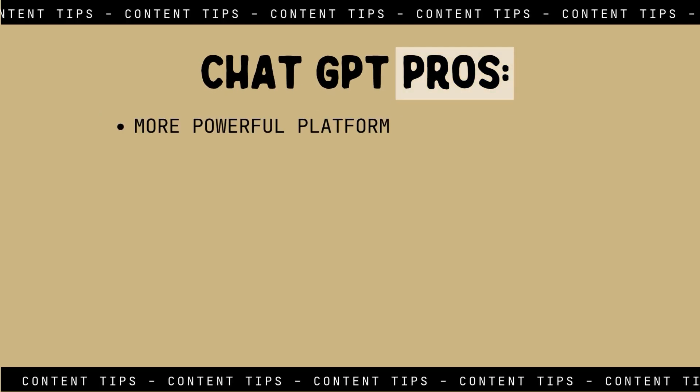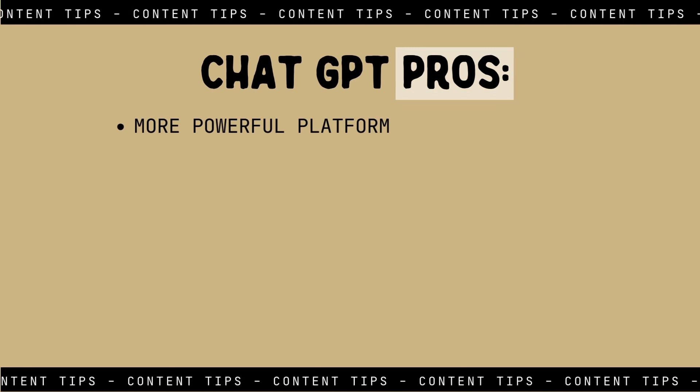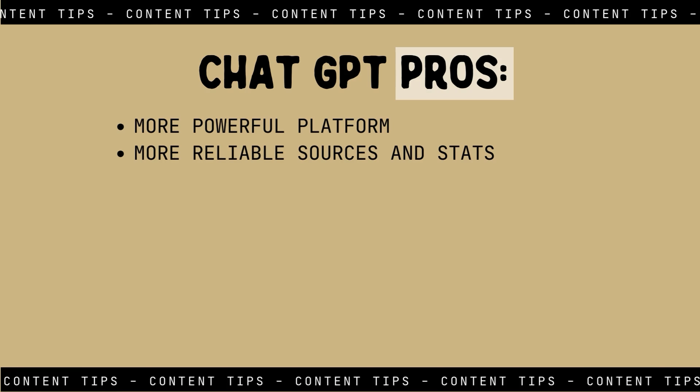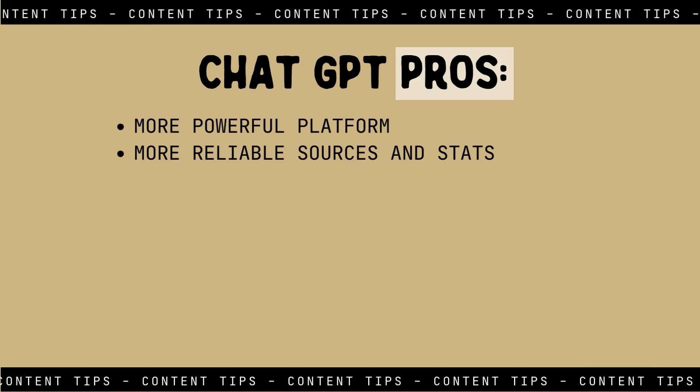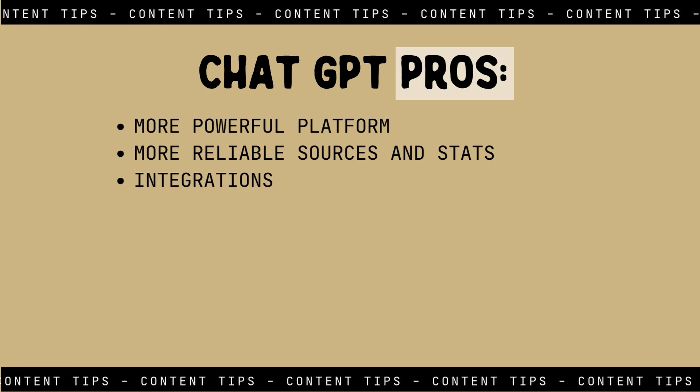Some pros of ChatGPT: I find it to be a bit more powerful. It's able to process information a bit faster, and I've noticed it can pull stats with sources that are a little bit more reliable. ChatGPT also has a ton of integrations — not only within the platform itself, but a lot of other software uses the base level foundation of ChatGPT.